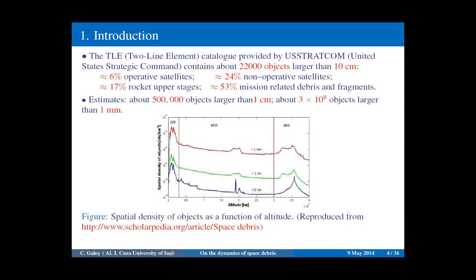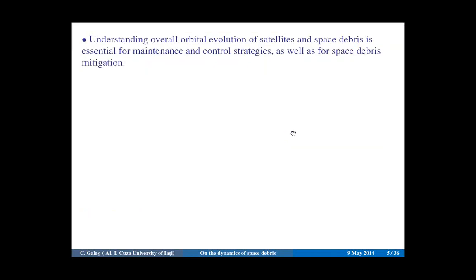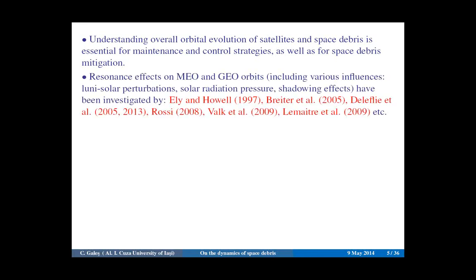The spatial density of objects as a function of altitude can be seen in this plot, where we recognize the main regions: the LEO, MEO, and GEO regions. Understanding the overall evolution of satellites and space debris is essential for maintenance and control strategies, as well as for space debris mitigation. A large number of works are dedicated to studying the dynamics of space debris, in particular the resonance effects on LEO and GEO orbits.